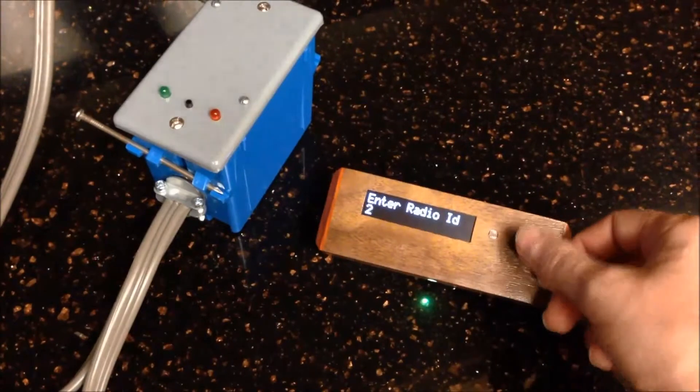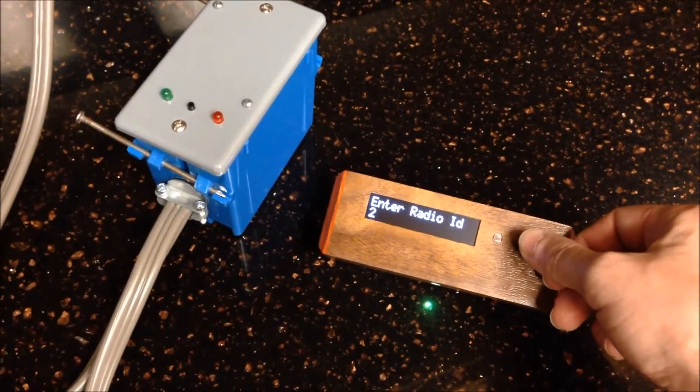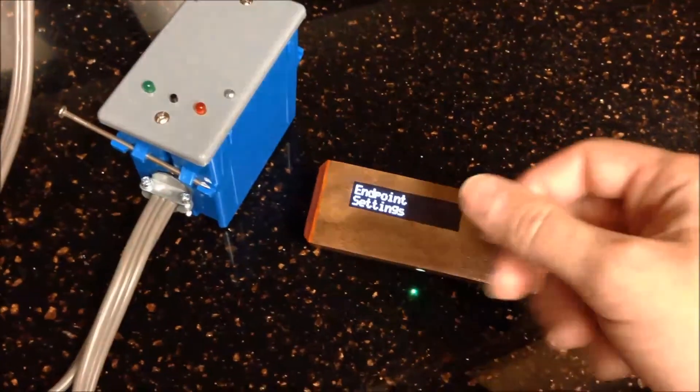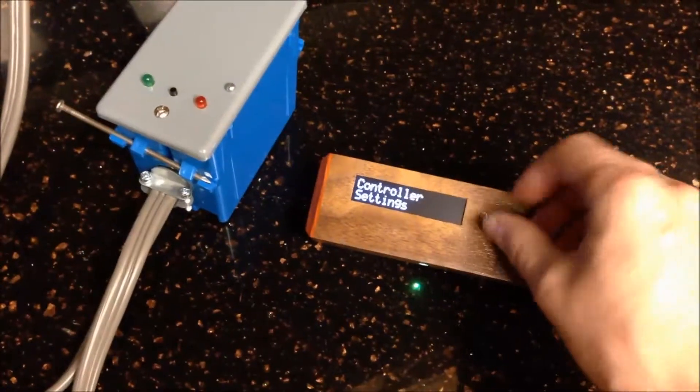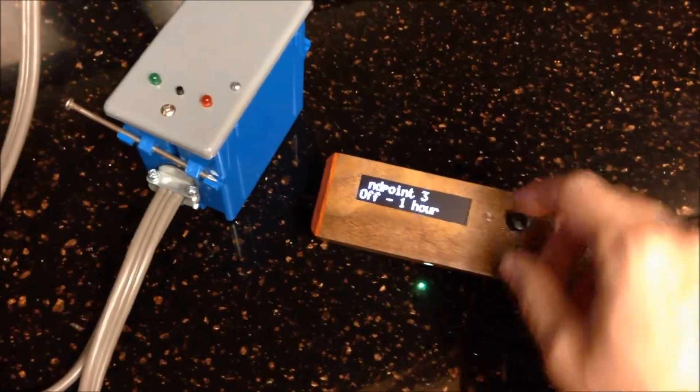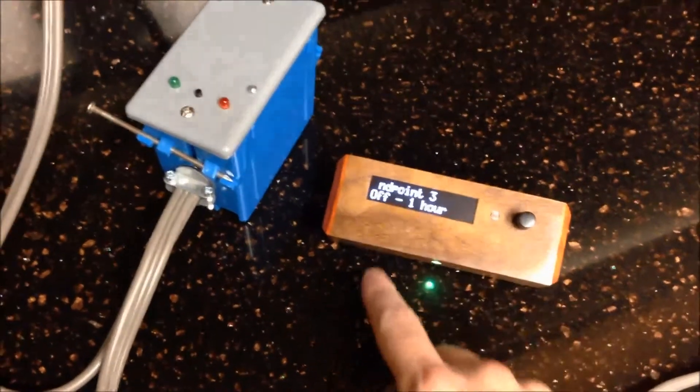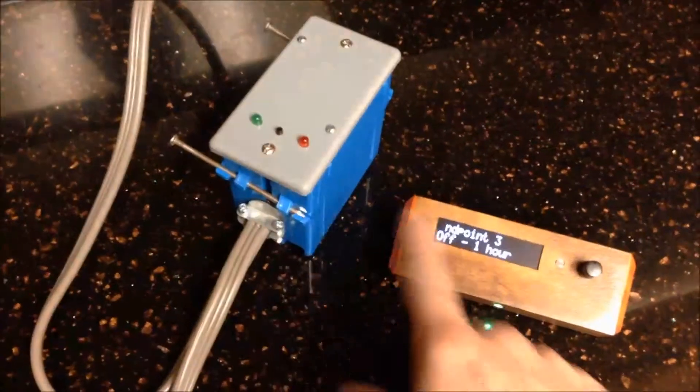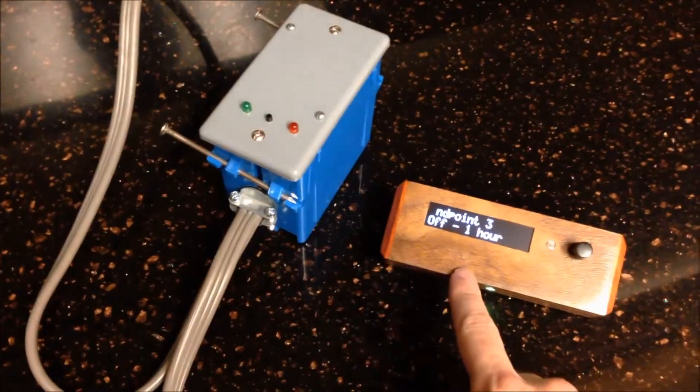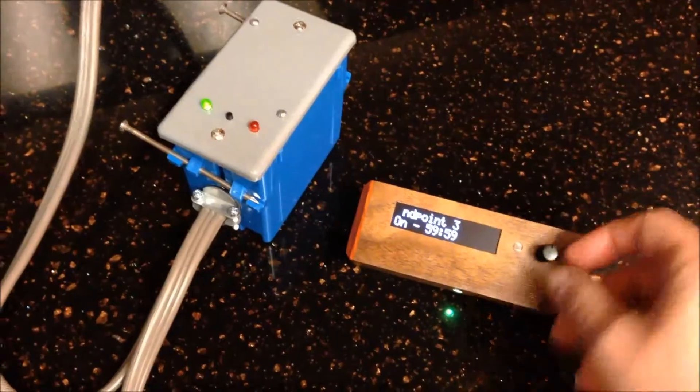It defaults to being one but this is set up to be number two, so I'll just put it on number two and click that and then you're all done. Now if you go back over to the left you'll have your name and then you can see it was able to communicate with this guy and you could turn it on. There's the little light turned on and turn it off.